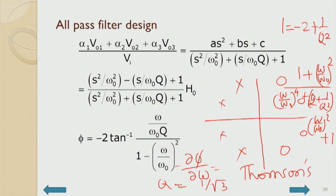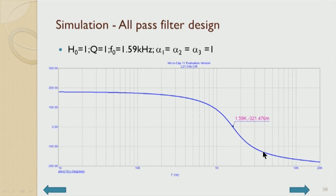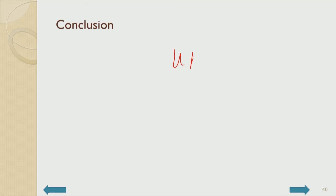The all-pass filter is used as a delay compensating mechanism — it does not affect the amplitude, only the phase. For Q equal to 1, the amplitude characteristic remains constant at H naught throughout all frequencies. In conclusion, we have covered a systematic method of synthesis of state variable filters and have obtained the circuit of what is called the universal active filter block.